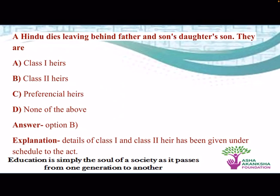A Hindu dies leaving behind a father and son's daughter's son. Are they A. Class 1 heirs, B. Class 2 heirs, C. Preferential heirs, D. None of the above? The correct answer is class 2 heirs. It is recommended to go through the schedule which mentions class 1 and class 2 heirs. Try to make a small flowchart or relate it with your family so you can differentiate who are class 1 heirs and who are not.